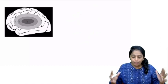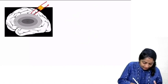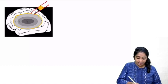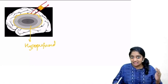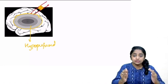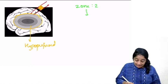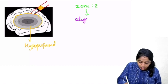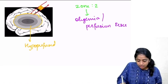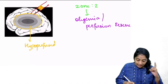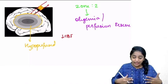Now going to the hypoperfused zone — the zone supplied by the occluded vessel. Even within it, there is varying extent of tissue involvement. Let's take the outermost area: zone number 2, called the oligemic zone or perfusion reserve zone. What is happening here? You are getting reduced blood flow because the blood vessel is blocked. But the brain tries to ensure cells receive sufficient oxygen by increasing cerebral perfusion pressure.